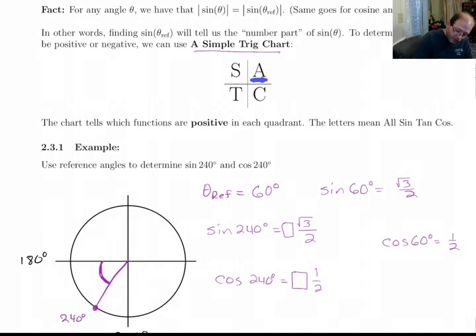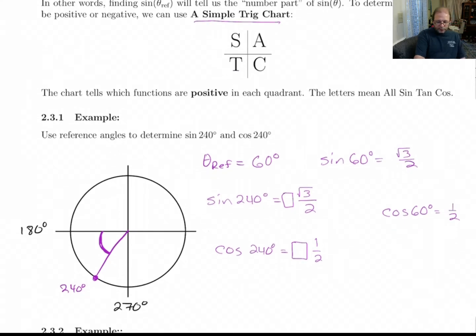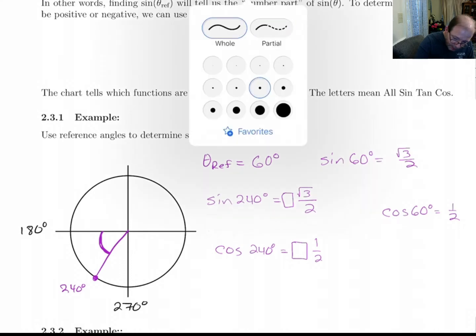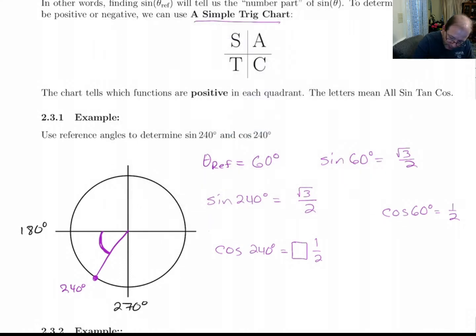So in this quadrant, all of them are positive, then only sine, then only tangent, then only cosine. So down here, we're in the third quadrant. That tells us that tangent's positive, but sine and cosine are both negative. So I'm going to come down here and based off of the ASTC chart, sine of 240 and cosine of 240 are both negative.